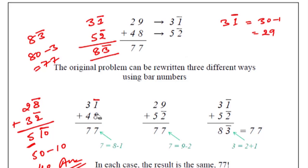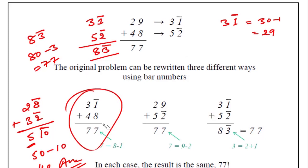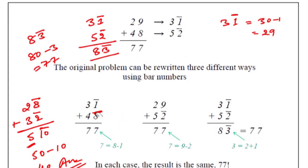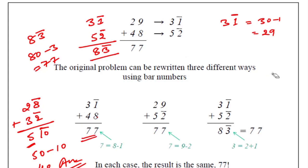Here we have only one bar, here there is no bar. So do: 31 bar plus 48. Whenever you have a bar, you have to subtract that number from the common number. So we have 8 minus 1, that is 7. And 4 plus 3, that is 7. Whenever you have a number like 8 plus 2 bar, it means we subtract: 8 minus 2, that is 6.